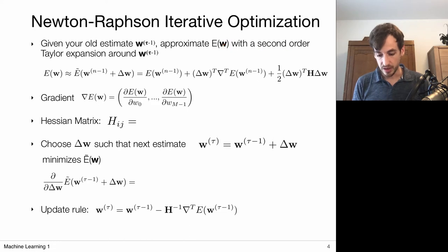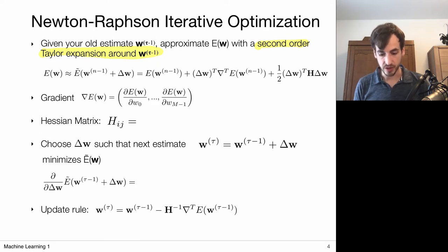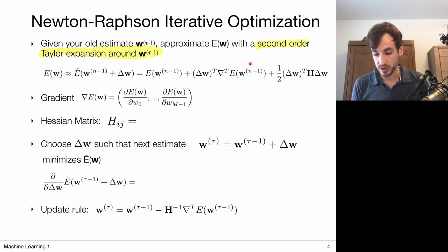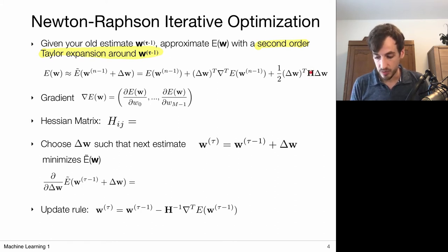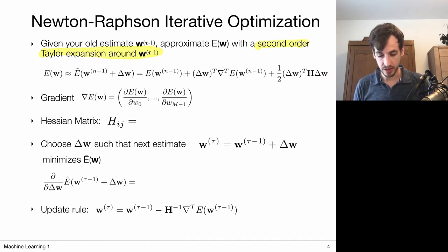We approximate the error function E(w) with a second-order Taylor expansion around the weights at time step tau minus one. For multivariate functions, the Taylor expansion takes the function value at the point considered, plus the first-order derivative (the gradient) times a step size relative to the central point, plus the second-order derivative — captured via the Hessian matrix — multiplied on the left and right by the step size. This is a second-order approximation centered around our current estimate for w.